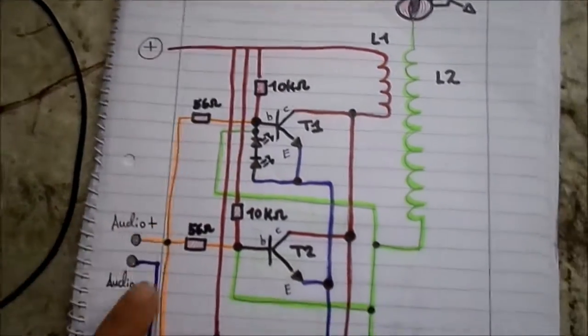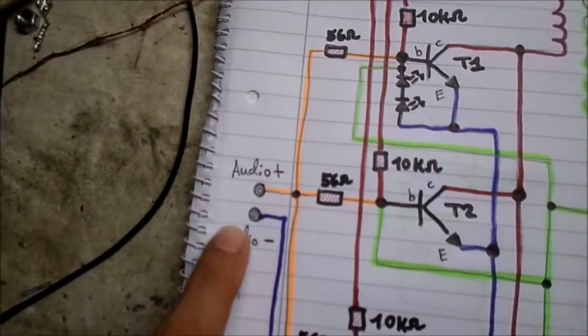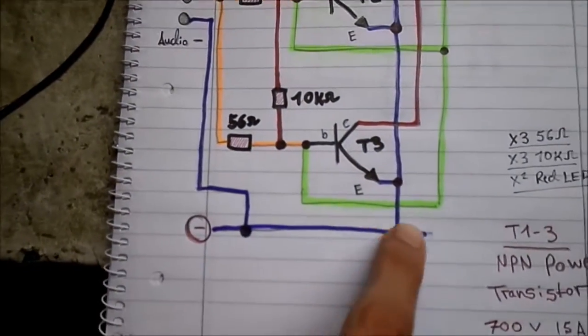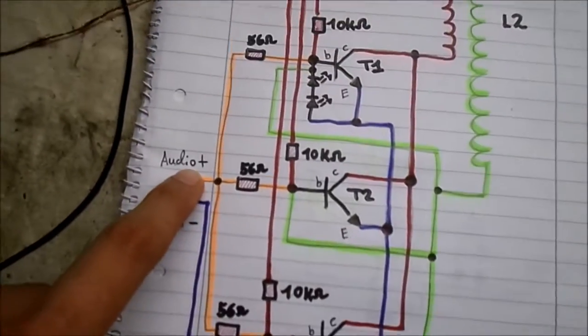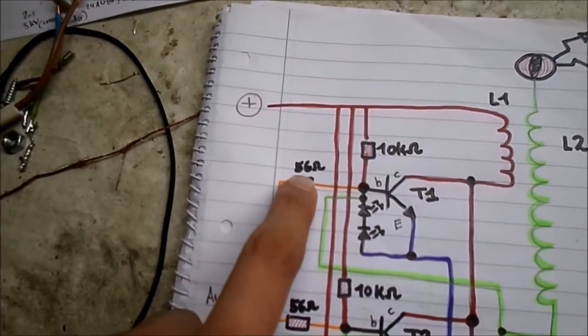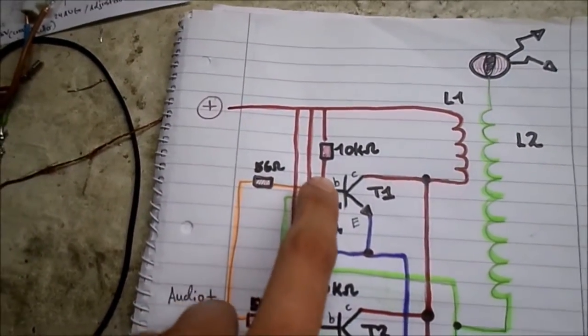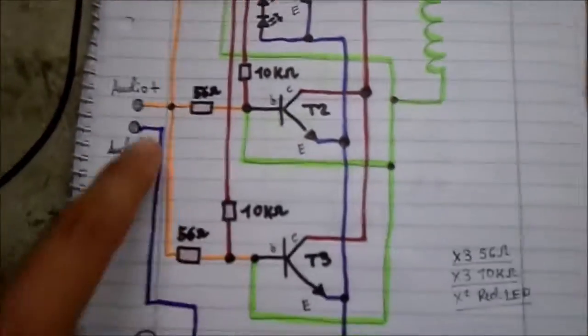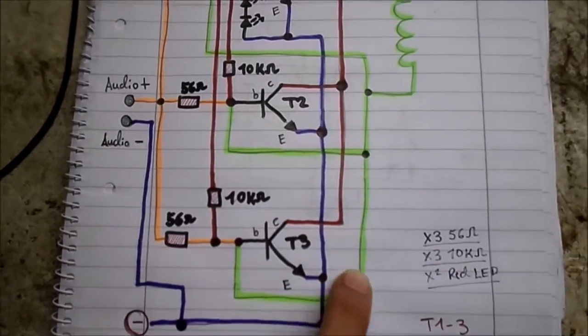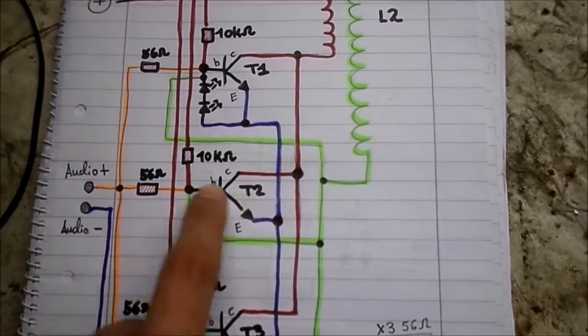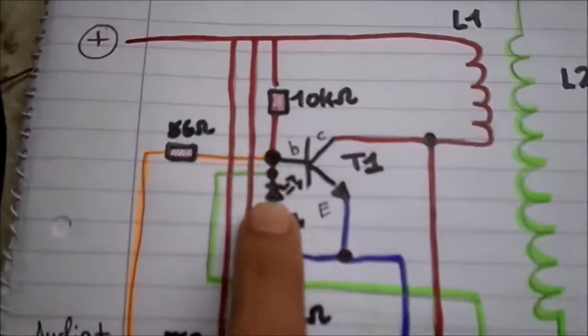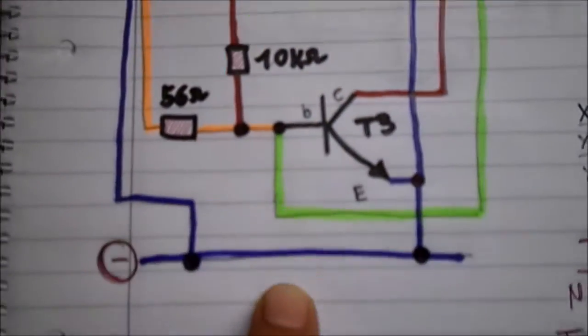And for the input audio, which is right here, get your plus and your negative. Negative obviously goes down to your negative on the power supply. And the audio, basically what I did was I put in series a 56 ohm resistor also onto the base of each transistor. That's basically all that is. You get your feedback from the secondary coil also going on to the base of each transistor.